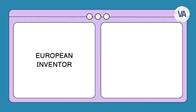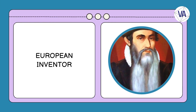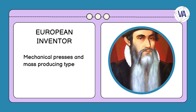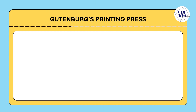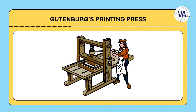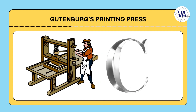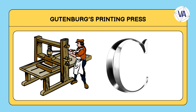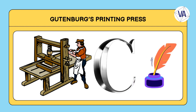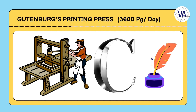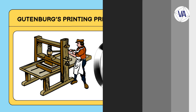The most famous European inventor of movable type was Johannes Gutenberg, a German goldsmith and printer, who created the first printing press based on previously known mechanical presses and a process for mass-producing metal type. Gutenberg's printing press, developed around the mid-15th century, consisted of a wooden frame that held a metal screw that pressed a paper sheet against an inked type. Gutenberg also developed a special alloy of lead, tin, and antimony for the type, and a new oil-based ink that adhered well to the metal. His press was able to produce up to 3,600 pages per day, which was much faster and cheaper than hand-copying.